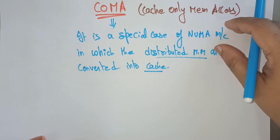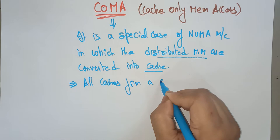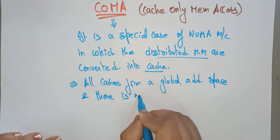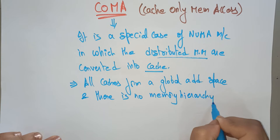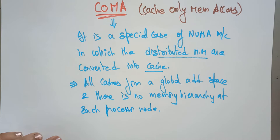All caches form a global address space, and there is no memory hierarchy — remember that. At each processor node, there should be no memory hierarchy. So COMA is a special case of NUMA because that distributed memory is converted into cache, and all those caches form one global address space.